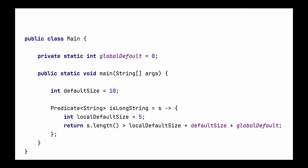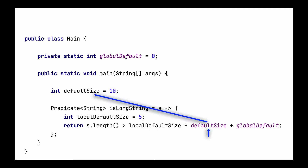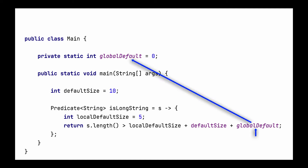That expression is accessing s, which is the parameter. That expression also has access to the local default size which is local to the lambda body. It can also read default size, which is outside of the lambda body but still we can read the value. Similarly global default is even outside the method — it's at the instance level or the class level — and the lambda body is able to read that variable's value as well.